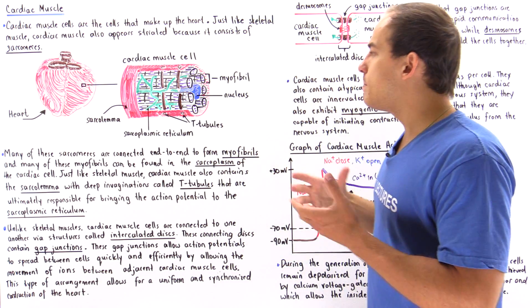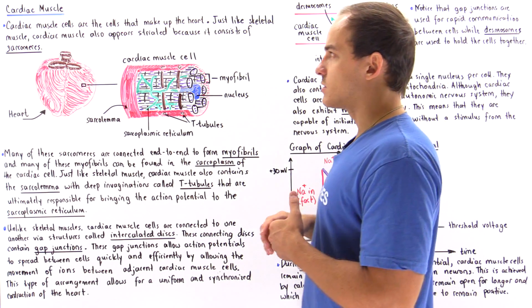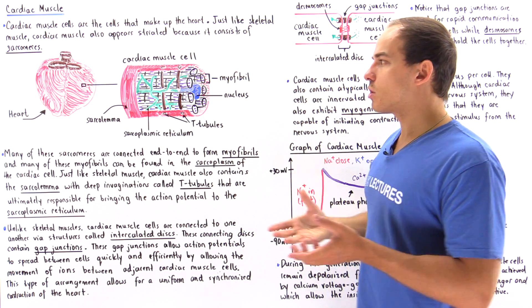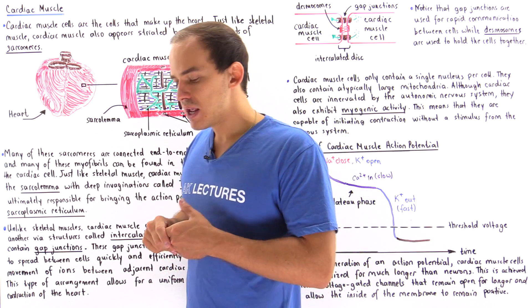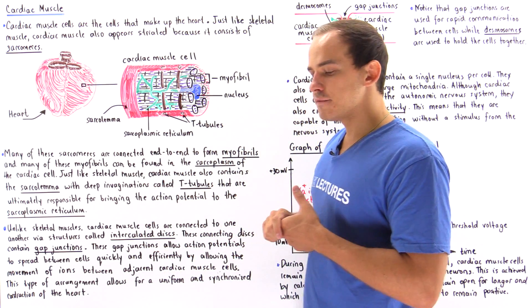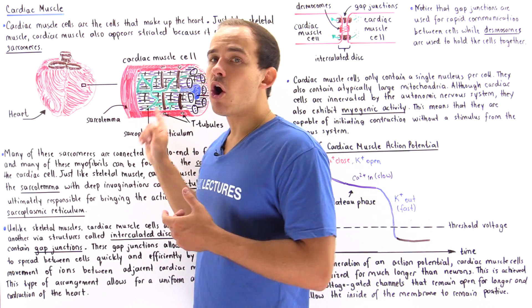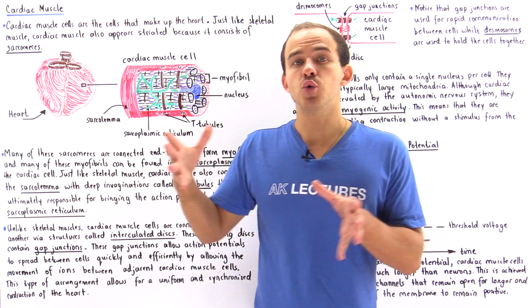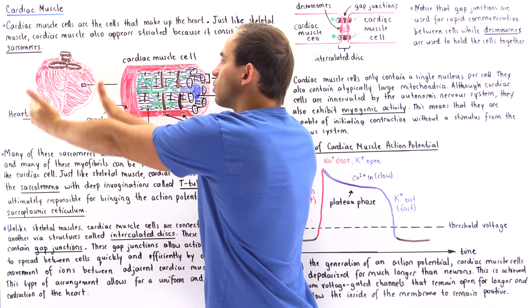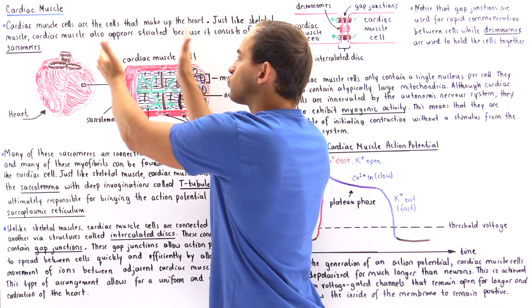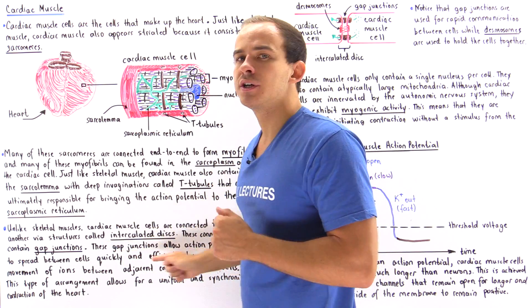The cytoplasm of our cardiac muscle cell is known as the sarcoplasm. So far, we see that many structures found in skeletal muscle are also found in cardiac muscle cells. The next important difference is that cardiac muscle cells are actually connected to one another — a second cardiac muscle cell will be found right next to the first.